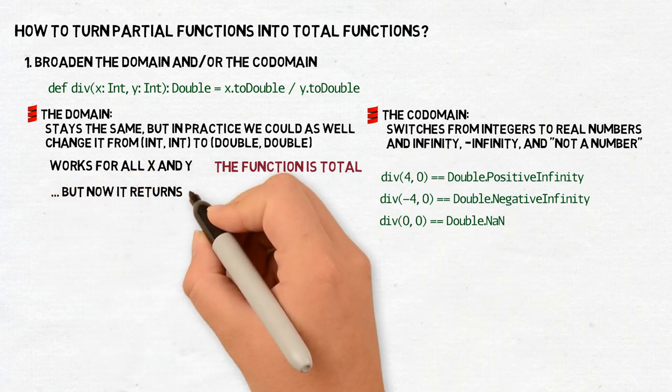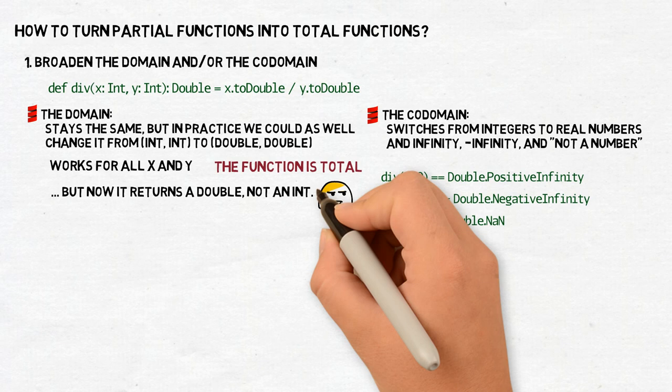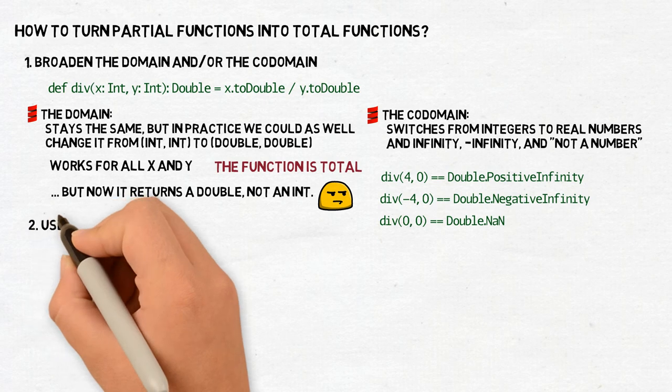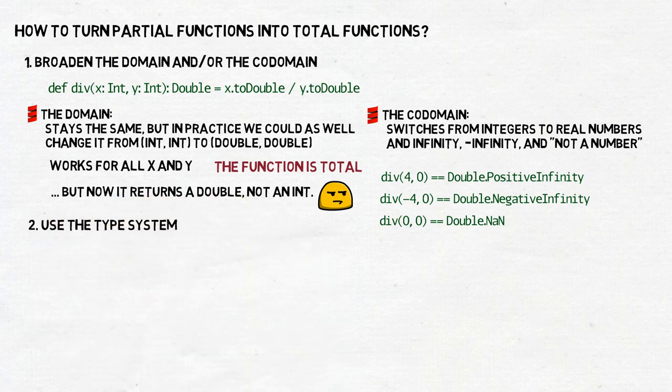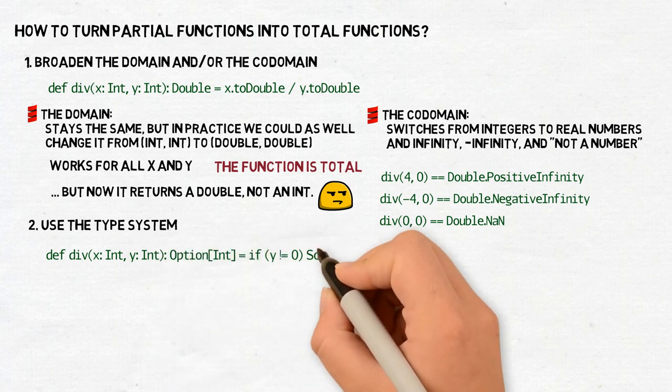Well, what if we actually wanted to use the div function only for integers, which can be divided without a remainder and any other outcome should be treated as an error? That's how the other better way works. It turns a partial function into a total one using types to better describe what the function can accept as arguments and what it returns. We will discuss that in one of the next videos.